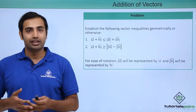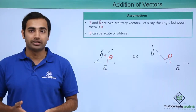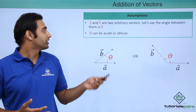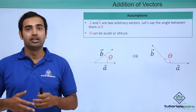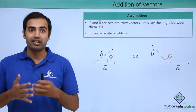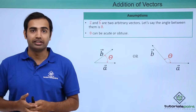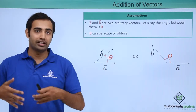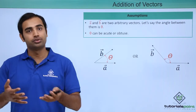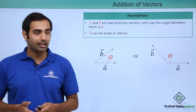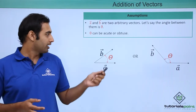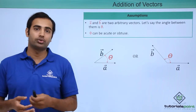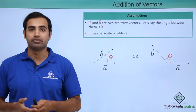Now let's talk about some assumptions we will be taking to solve this problem. We have two vectors A and B which can be of arbitrarily any length, and the angle between them will be theta, which can again be either acute or obtuse. Geometrically, I can visualize them as two vectors A and B having either an acute or obtuse angle theta between them.